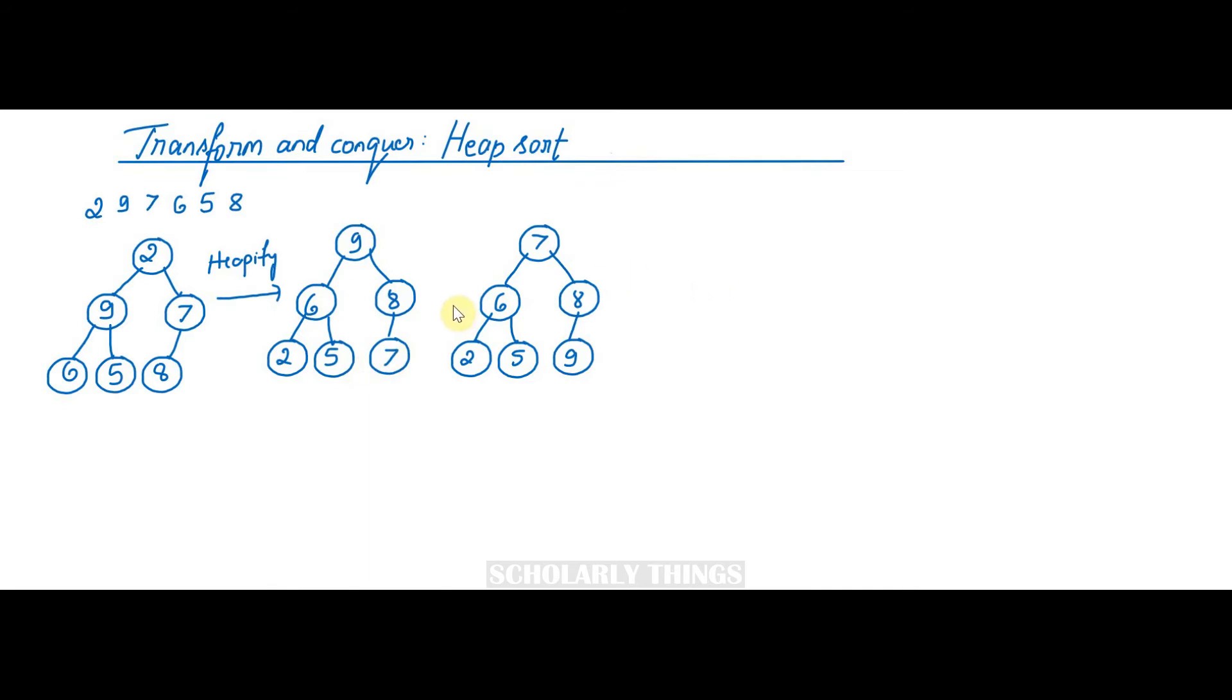Now we need to perform maximum key deletion. Consider the root node and the last element and then exchange it. In the next step, delete the last element. 9 will be deleted and then again reconstruct the heap. So all the parent nodes are greater than their children.